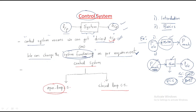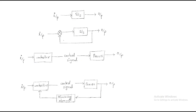The name itself tells you the structure: open loop looks like an open loop, and closed loop looks like a closed loop. In an open loop control system, there is an input, a controller that generates a control signal, and a process that produces the output. This is the structure of the open loop control system.